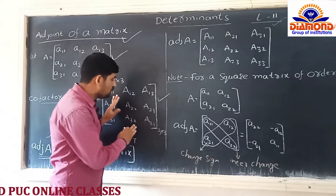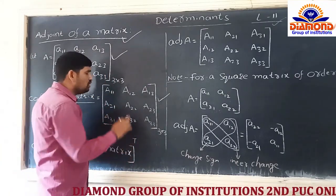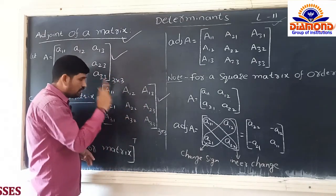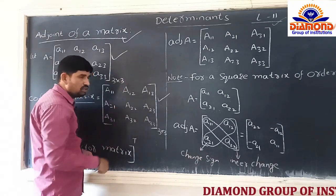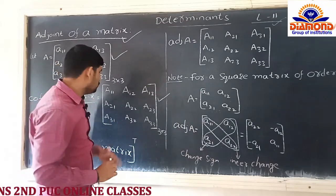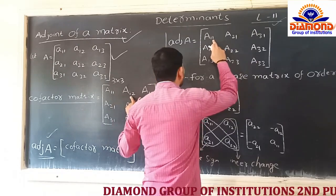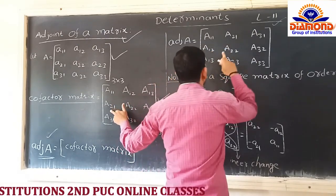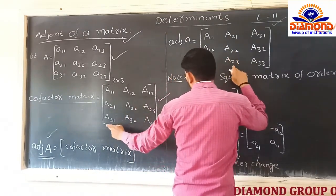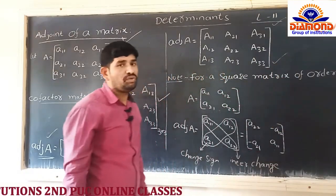Now we are making the transpose of the cofactor matrix. Transpose means: the first row is written as the first column, second row as second column, third row as third column - interchanging of rows and columns is called transpose. So writing the first row in first column: A₁₁, A₁₂, A₁₃; second row: A₂₁, A₂₂, A₂₃; third row: A₃₁, A₃₂, A₃₃. This is the Adjoint of a matrix.